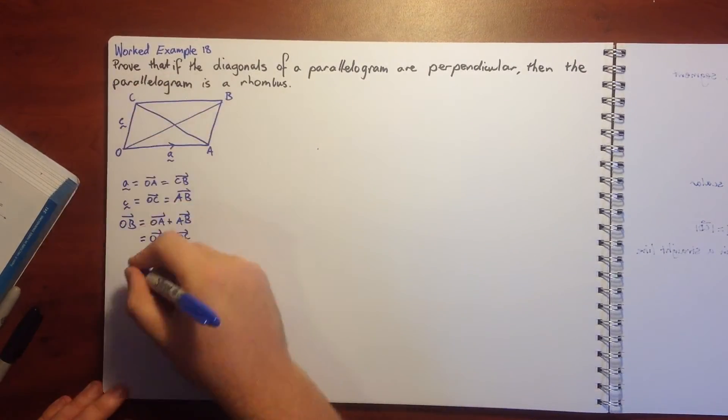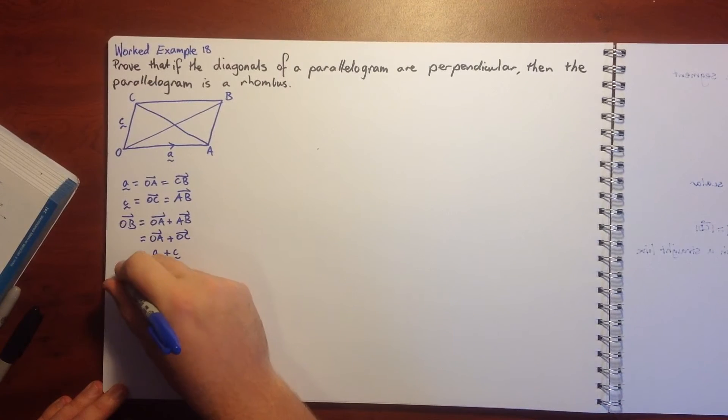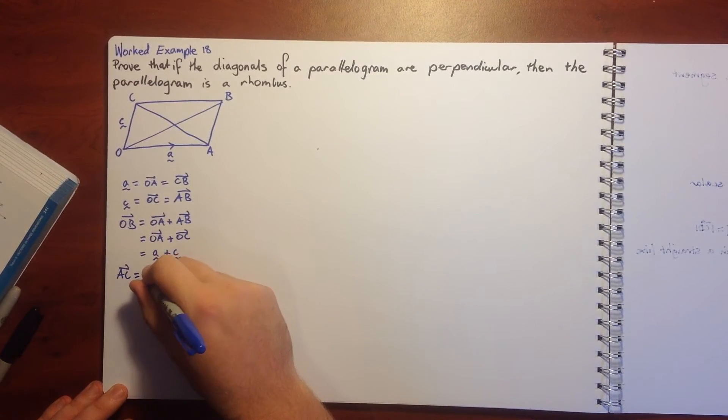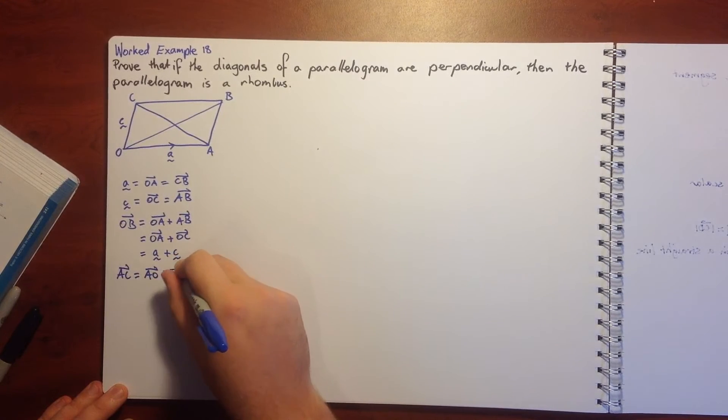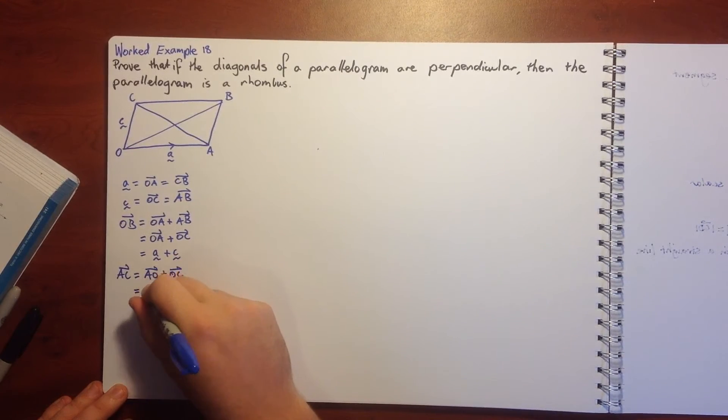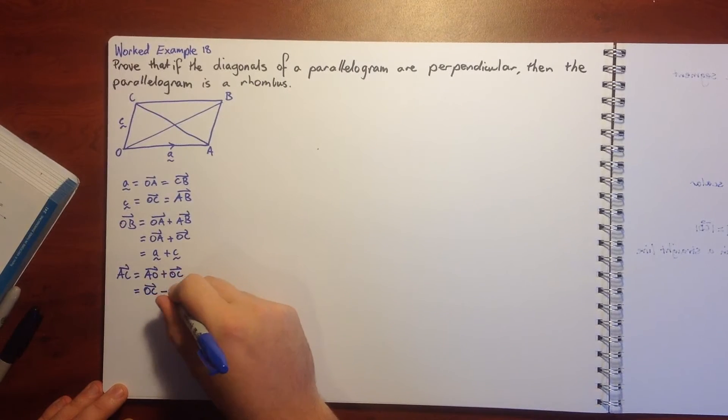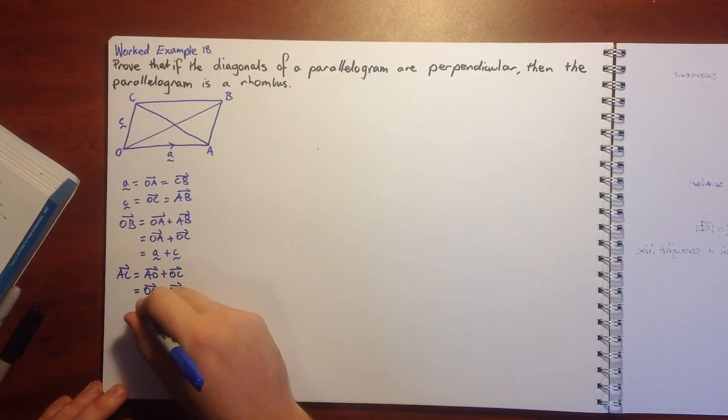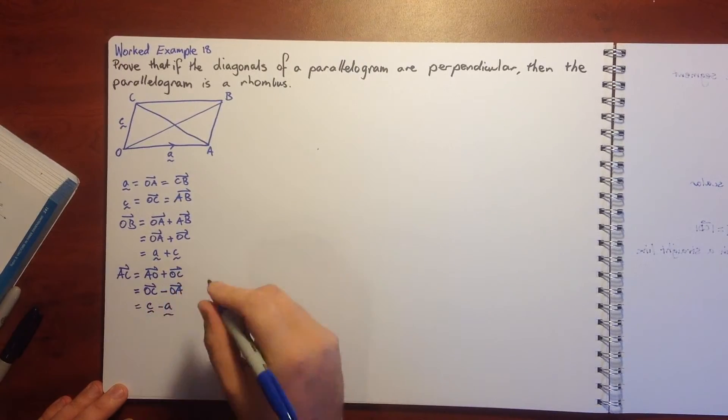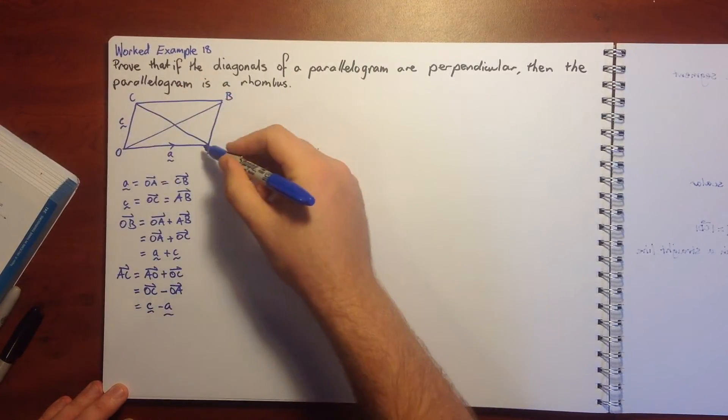If we look at our diagonal from A to C, AC is equal to AO plus OC, which is equal to OC minus OA, which equals C minus A. That's this diagonal from A to C.